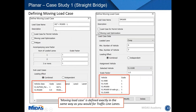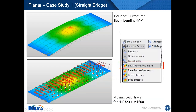Creating the moving load case is done similarly to traffic line lanes. When using an influence surface, you will not see influence lines as Midas only allows either influence lines or influence surface in one analysis. The influence surface for maximum bending at a point near mid-span is shown, and the moving load tracer similarly shows where wheels are positioned for maximum movement at that element.